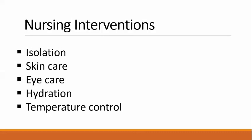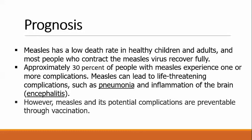Prognosis: Measles has a low death rate in healthy children and adults, and most people who contract the measles virus recover fully. Approximately 30% of people with measles experience one or more complications. Measles can lead to life-threatening complications such as pneumonia and encephalitis. However, measles and its potential complications are preventable through vaccination. Thank you for watching.